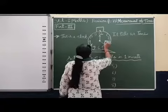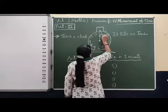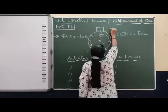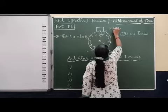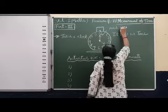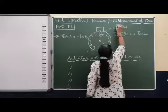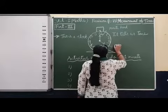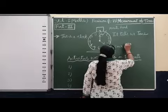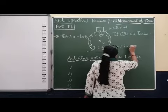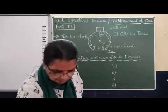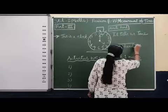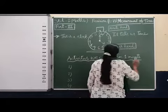Now this is called, this is called, you can write here, minute hand. Minute hand. This is called minute hand. And this is called hour hand. Hour hand. So better keep it in box so that you can understand, this is minute hand and this is hour hand.